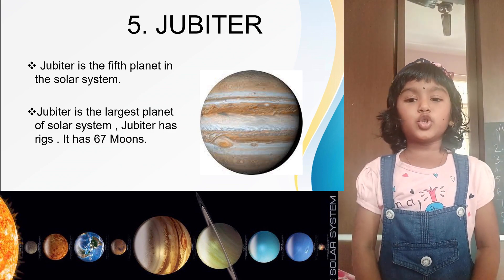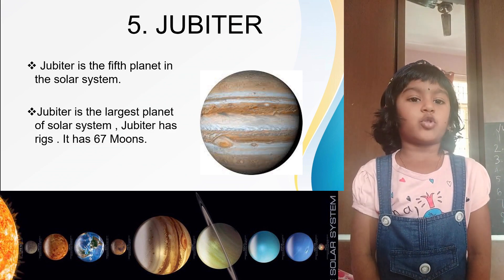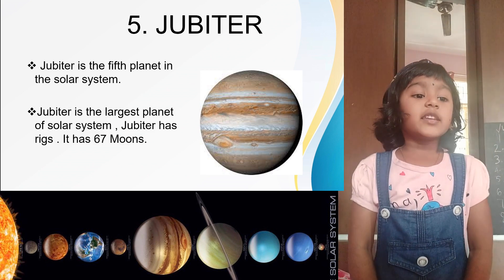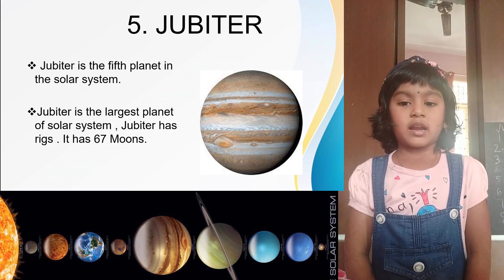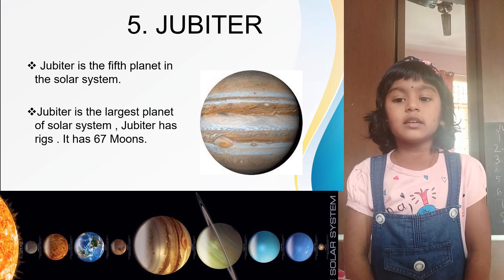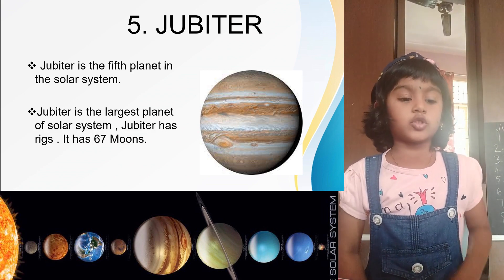Jupiter. Jupiter is the fifth planet of the solar system. It is the biggest planet. It has rings and 67 moons.